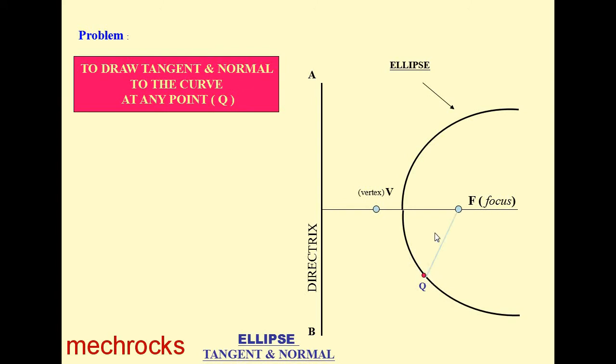Now join Q with F. Draw a perpendicular to the QF line towards AB. Perpendicular means 90 degrees. This line and QF should be perpendicular, and name the point where this line intersects the directrix as P.